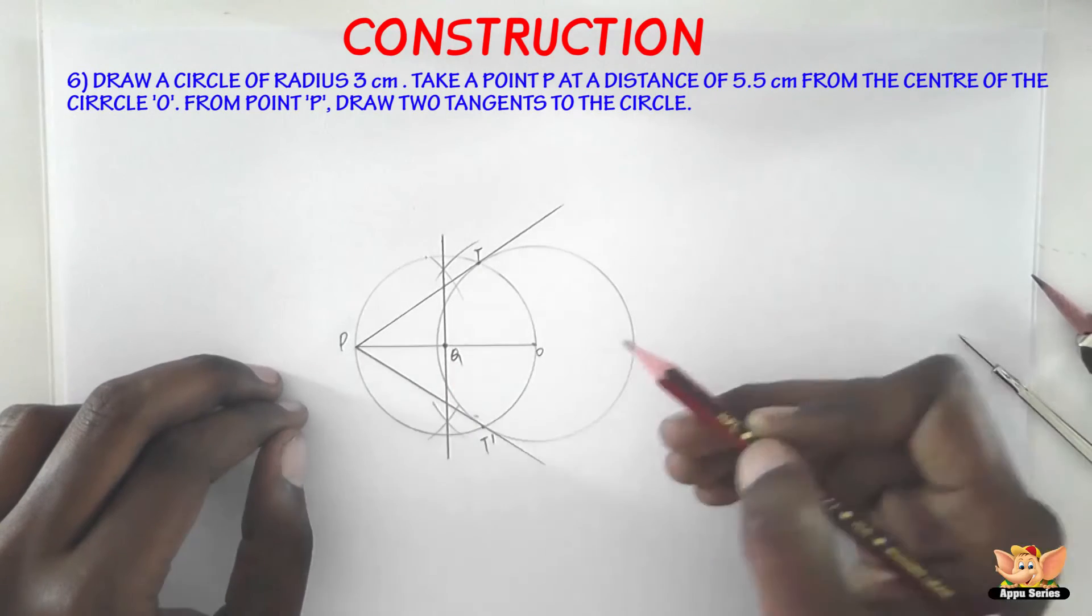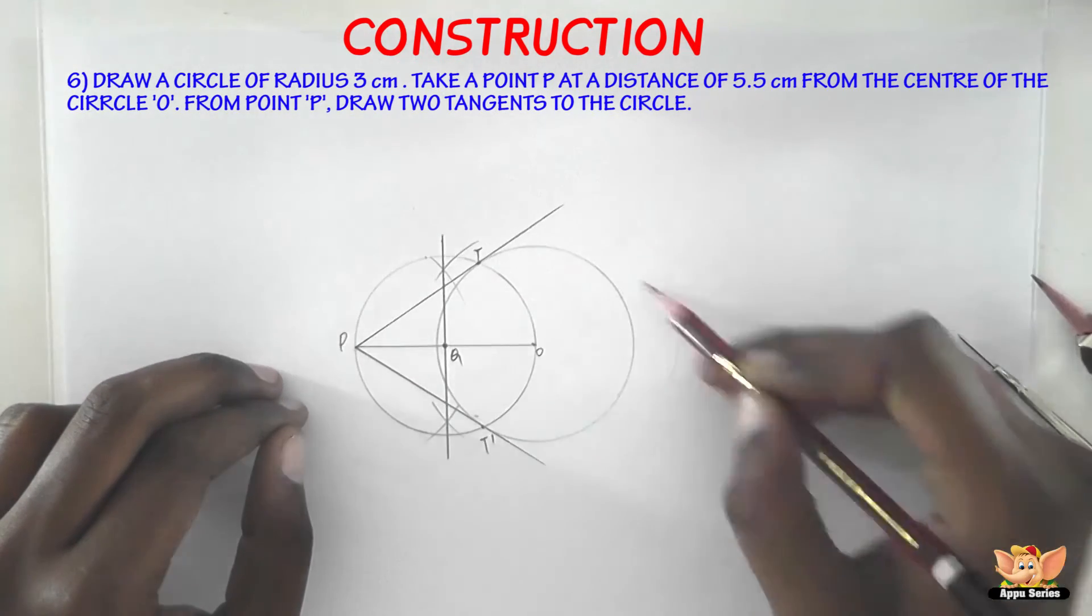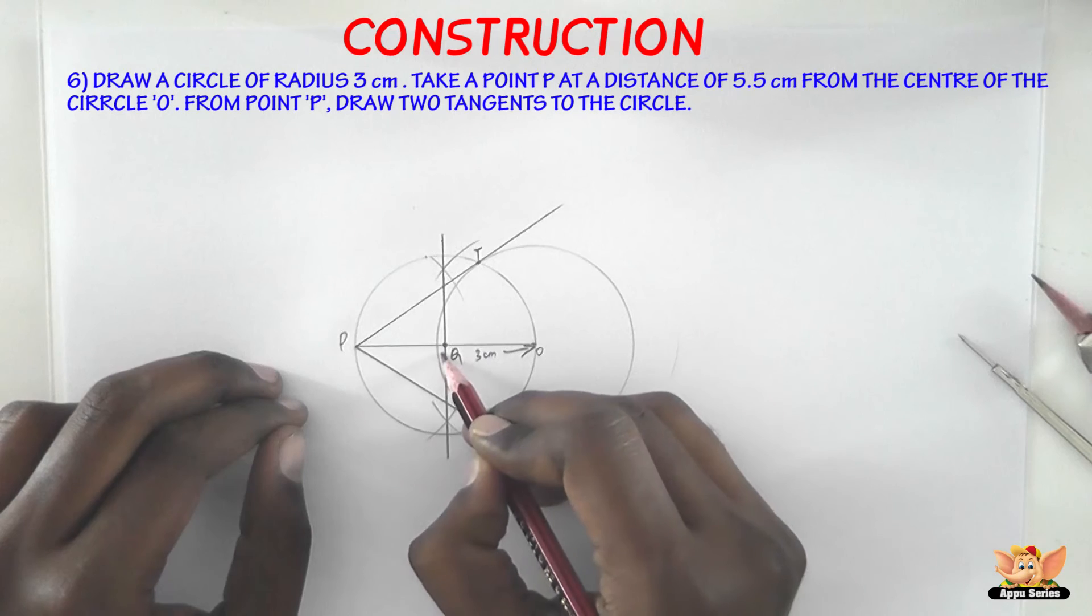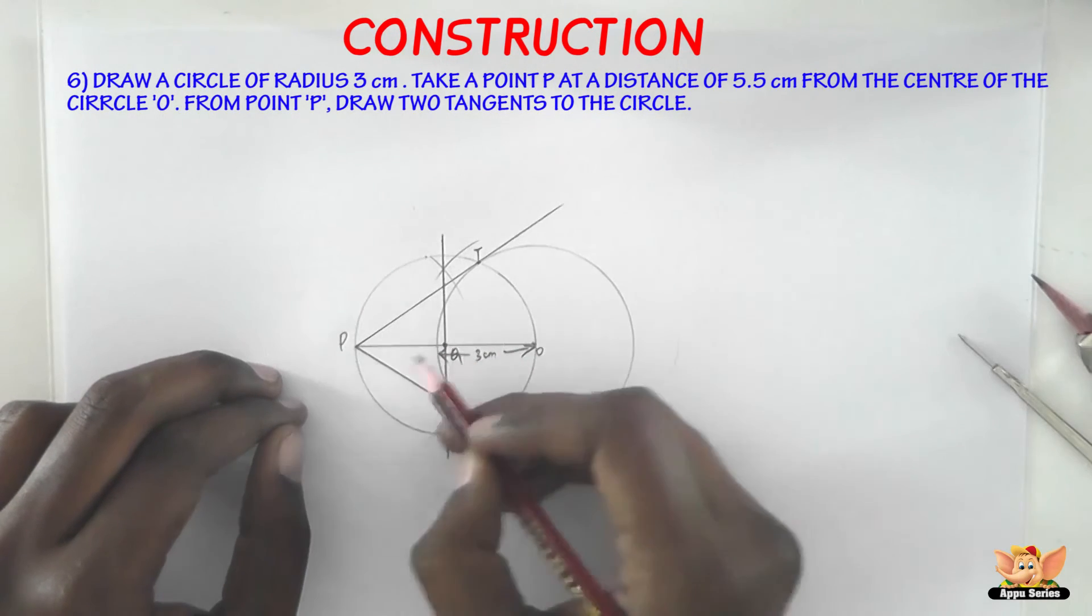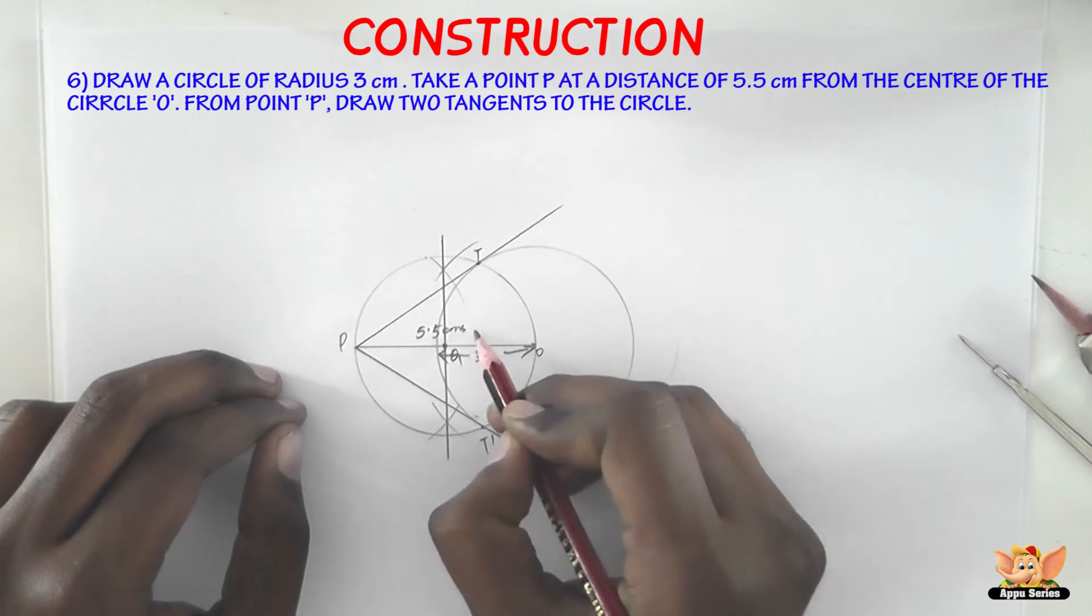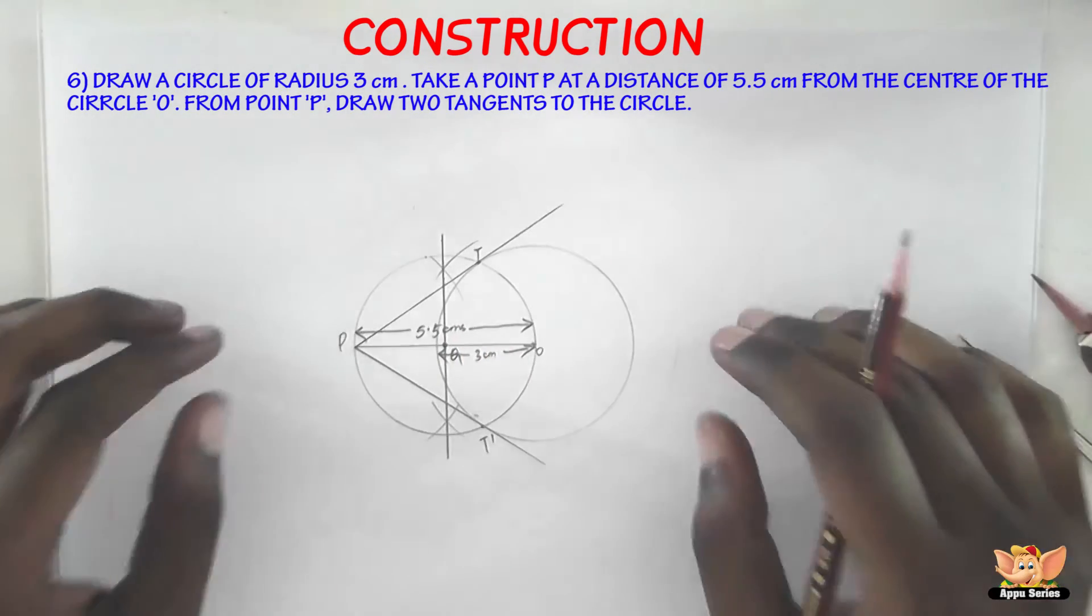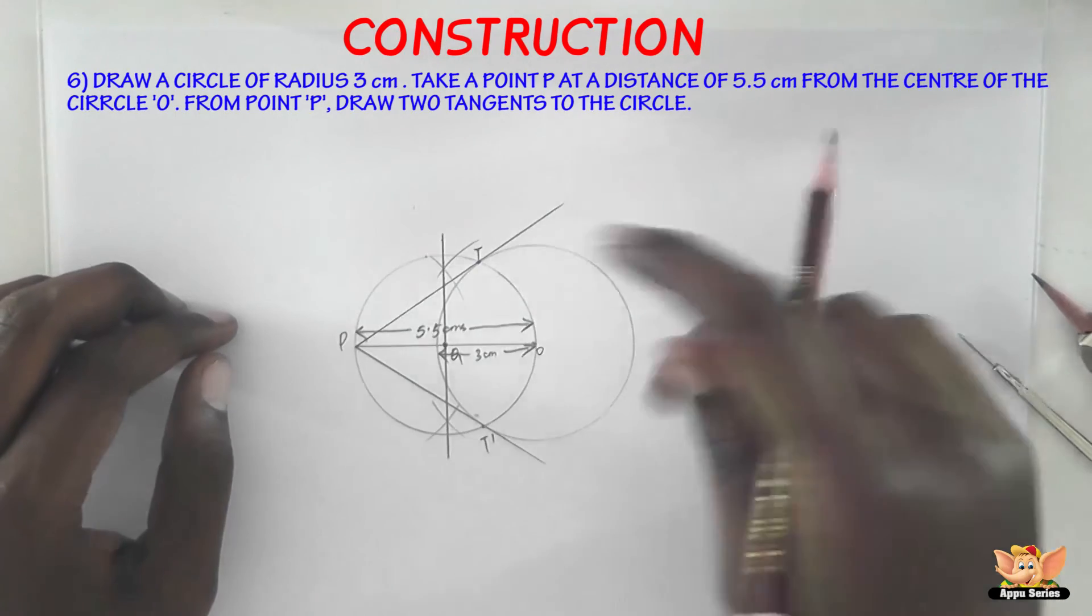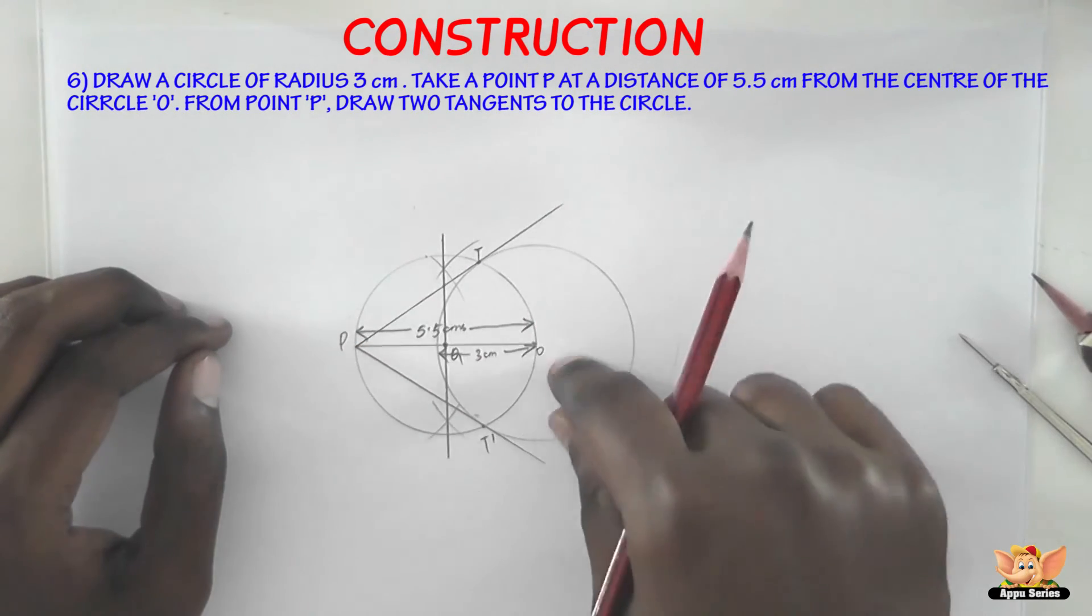And before we close let me write the measurements here. The radius of the circle we've drawn here is 3 centimeters. That is from here to here. And then OP is 5.5 centimeters. So this completes the construction of tangents to a circle from an external point when the center is known.